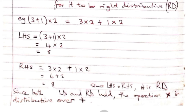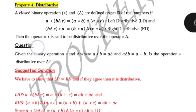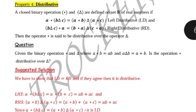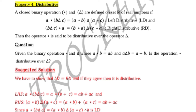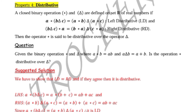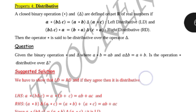Now, let's move on to the next example. Given the binary operations star and triangle, where A star B equals AB and A triangle B equals A plus B, is the operation star distributive over triangle? In other words, star is multiplication and triangle is addition. To prove this, we have to show both left and right distributive properties hold.